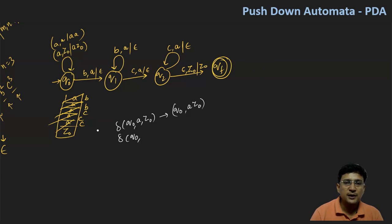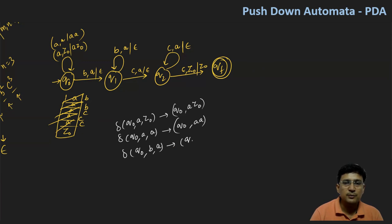In q0 state with input symbol 'a' and stack top A, we push another A. Then, in q0 state with input symbol 'b' and stack top A, we pop the symbol by moving to q1 and replacing the top symbol with epsilon. In q1, if we get b with A as the top symbol, we stay in q1 and pop the A symbol.